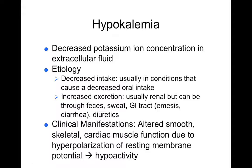Hypokalemia is low blood potassium. This can come from decreased intake or excess secretion through feces, sweat, or vomiting. You can lose a lot of potassium through vomiting or excessive use of diuretics. Potassium is involved with the action potential — it helps repolarize the action potential. With low blood potassium, you see neurological manifestations: altered neuromuscular excitability. Smooth muscle contractions are altered, cardiac muscle function is altered due to resting membrane potential changing. This leads to hypoactivity — muscle weakness — in smooth, cardiac, and skeletal muscle.